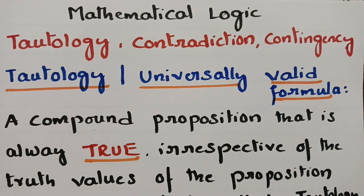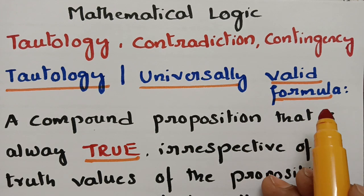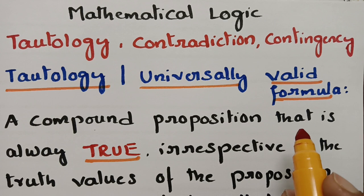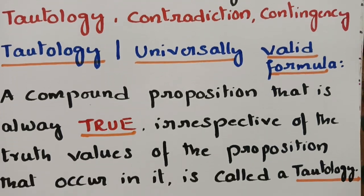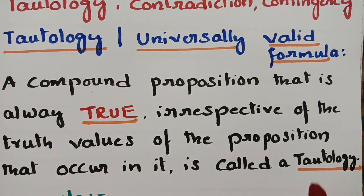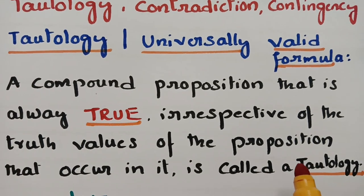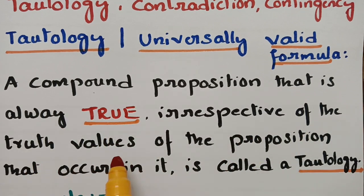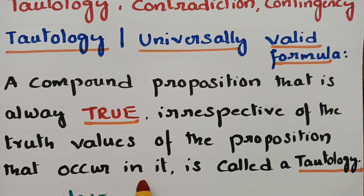Tautology is otherwise known as a universally valid formula. Sometimes it is asked: what is a universally valid formula? A compound proposition that is always true, irrespective of the truth values of the propositions that occur in it, is called a tautology.